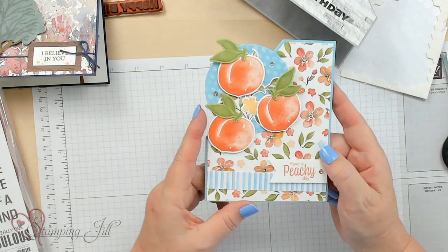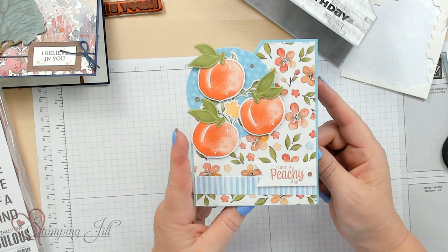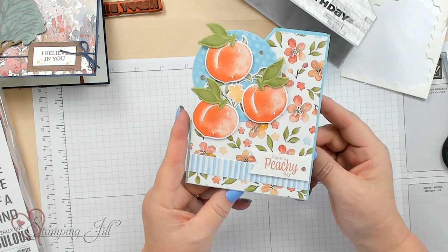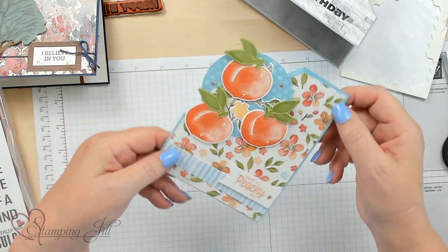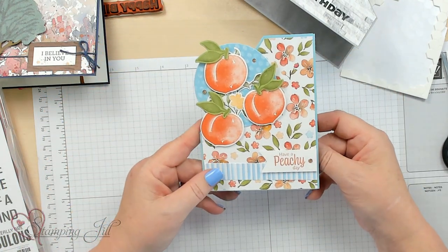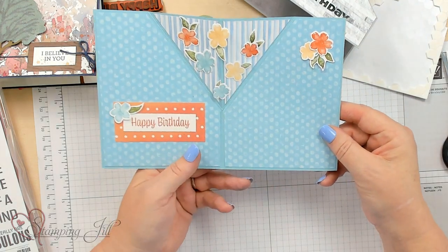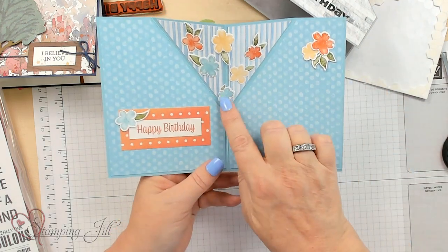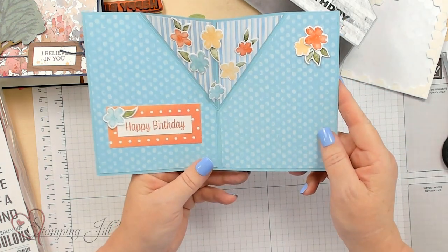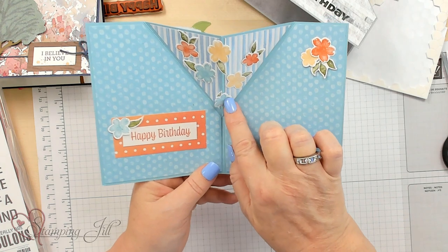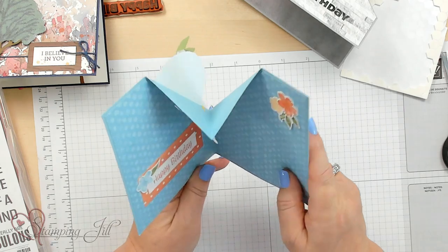This next one is the Peach set and I love the designer series paper with this. Now if you notice, instead of doing a card like this, I went ahead and did it tall and you can open it up and you have a surprise in the center. It just depends on how you put your inside to how it's going to form. You only want to adhere it on the one side of the fold so it shows that it can open up.